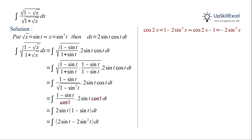We know that cos 2t = 1 − 2 sin²t. So, cos 2t − 1 = −2 sin²t. We will use this to substitute our second term, giving us the integration of 2 sin t + cos 2t − 1 dt.